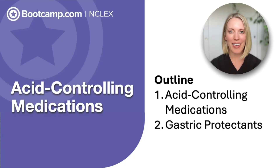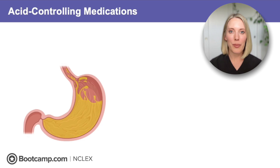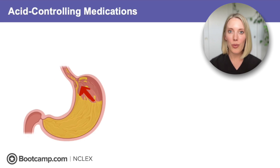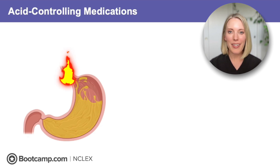Today we're talking about acid controlling medications and what the NCLEX expects you to know. Let's start with a quick patho overview. Your stomach produces acid to help you digest food, but when there's too much acid, we can start to see problems — specifically if the lower esophageal sphincter isn't doing its job. This allows acid to splash up or reflux into the esophagus. The stomach has a special mucus lining that protects it from acid, but the esophagus isn't meant to deal with this acidity, and when that acid splashes up, it becomes irritated, inflamed, and damaged — this is gastroesophageal reflux disease.